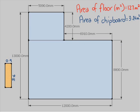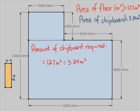The final thing we have to find out is how many pieces of chipboard are needed. We'll work this out by getting the area of the floor and dividing into it the area of each bit of chipboard. So 127 metres squared divided by 3.24 metres squared gives us 39.2. Now you can't buy 39.2 pieces of chipboard, so we're going to need 40 pieces of chipboard.